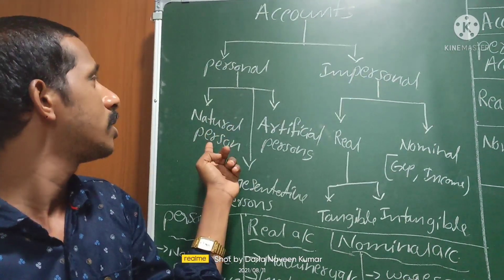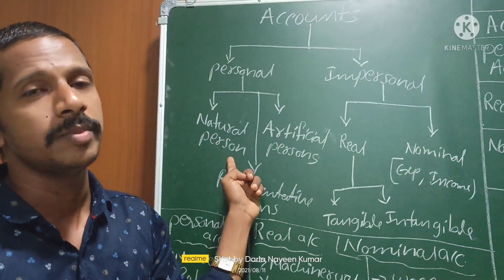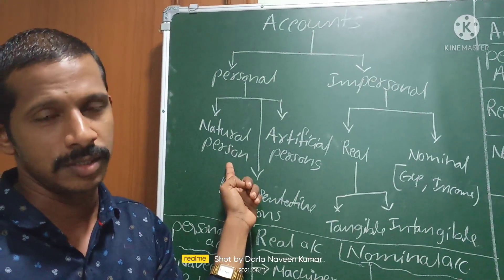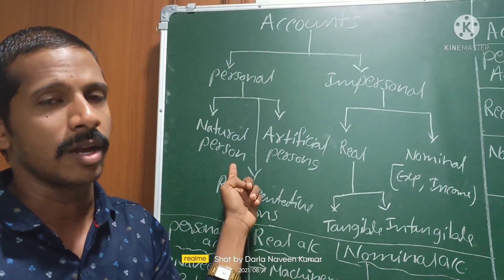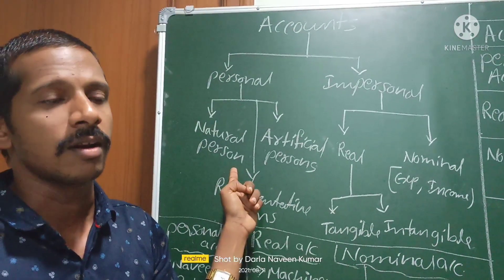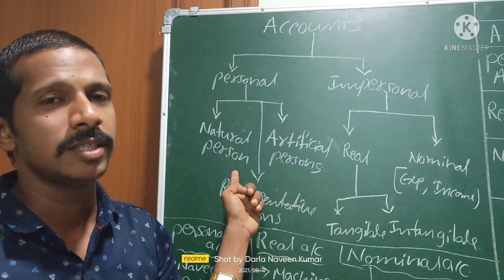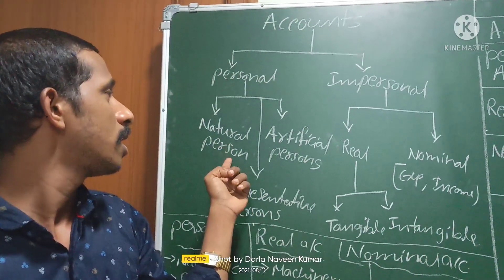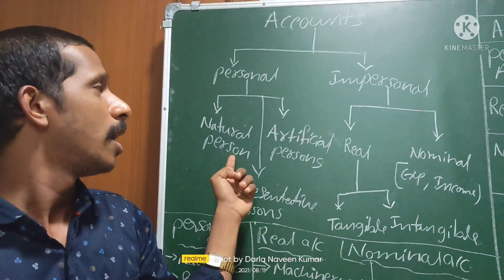Natural persons means which are created by God — like human beings. For example: Ram account, Rahim account, Akbar account, Amar account, Anthony account, Rani account, Sudha account — everything is an account. Generally, human beings are natural persons.